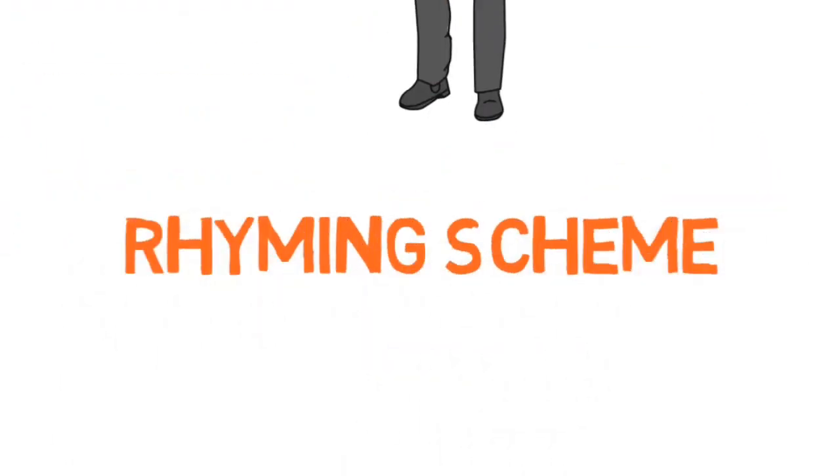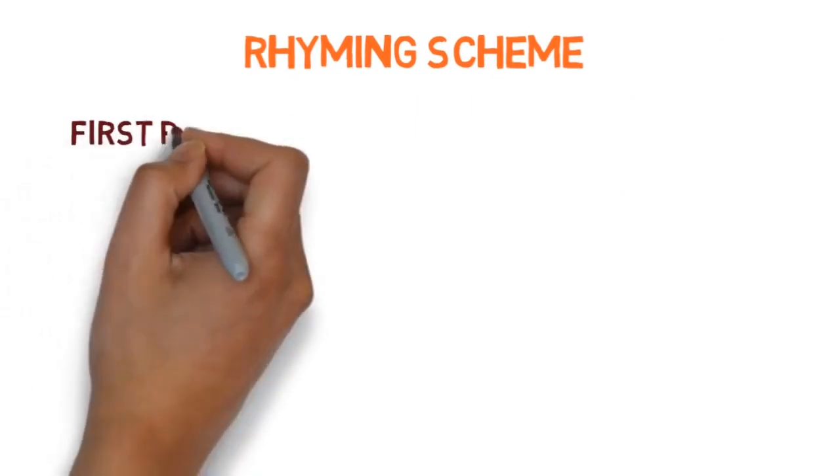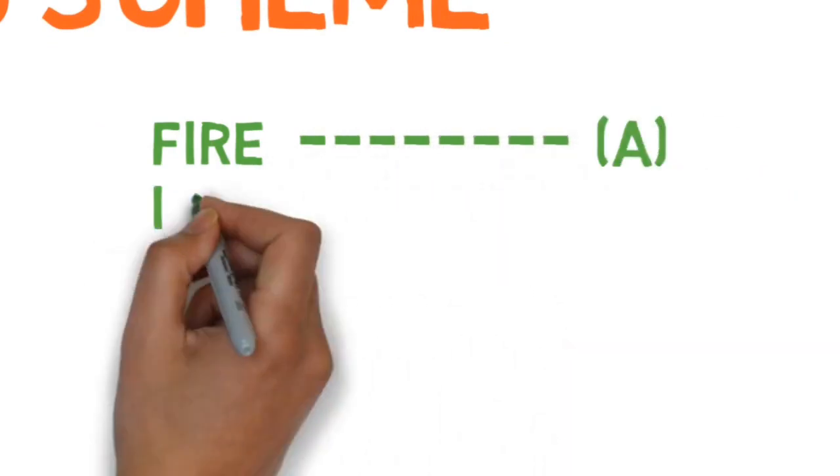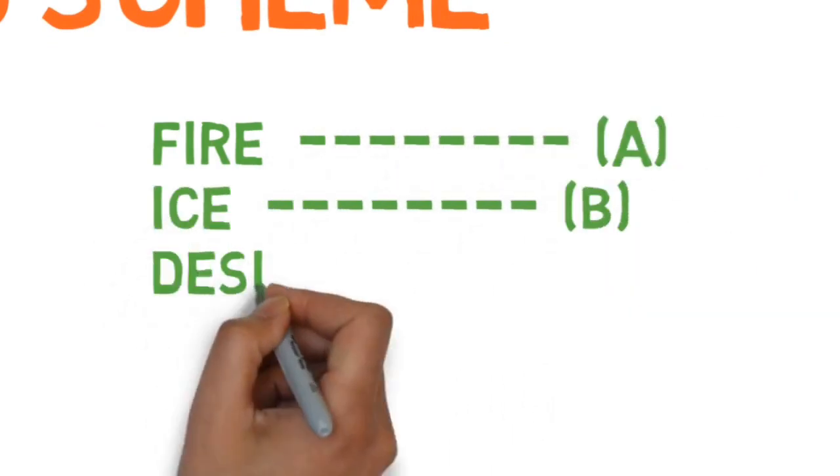This was all about the poem. Now let's see the rhyming scheme of the poem. So in the first para, we will do it just like we did last time, we will look at the last word of each line.